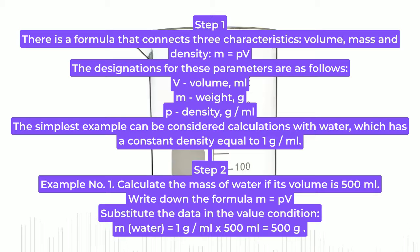V: Volume (milliliter), m: Mass (g), p: Density (g/ml). The simplest example can be considered calculations with water, which has a constant density equal to 1 g/ml.